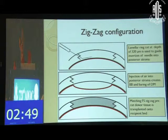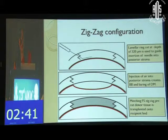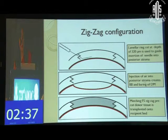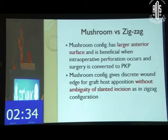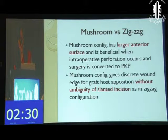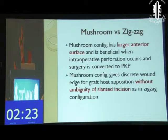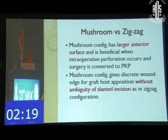Some people even give reference radial alignment incisions with the femtosecond laser, though this is not advocated by all. After the zigzag is done, air can be injected through the cannula, and a matching femtosecond zigzag pre-cut donor tissue is transplanted onto the recipient bed. The mushroom configuration has the advantage of a larger anterior surface, and if conversion to penetrating keratoplasty is needed, the smaller posterior cut is beneficial.